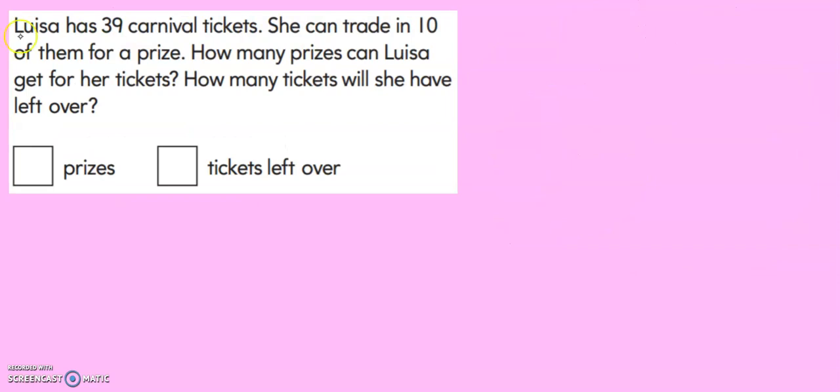So in this problem, it was a good idea to draw out the number and see how many groups of 10 Dee had to go buy her stickers. Let's try another problem. Louisa has 39 carnival tickets. She can trade in 10 of them for a prize. How many prizes can Louisa get for her tickets? How many tickets will she have left over?